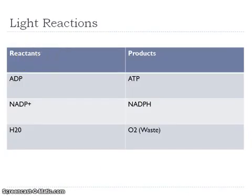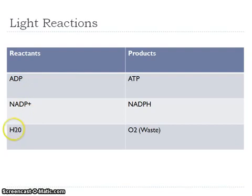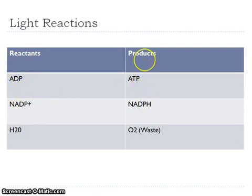What we really need to know are our reactants and our products. Reactants are ADP, NADP+, and H2O. The water molecule is important to getting our electrons, and these are the uncharged versions of our molecules that we are storing energy in. As we're storing this energy, we're creating ATP and NADPH, and we're also producing oxygen as a waste product.